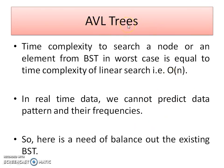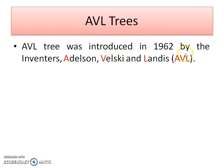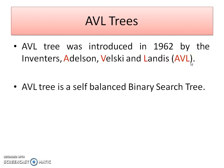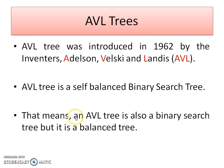For balancing, a new concept is introduced — that is the AVL tree. The AVL tree was introduced in 1962 by three scientists: Adelson, Velsky, and Landis. The first letters of these scientists' names are given to this tree — that is the AVL tree. This AVL tree is a self-balanced binary search tree. Basically it is a binary search tree, but it is a self-balanced one.